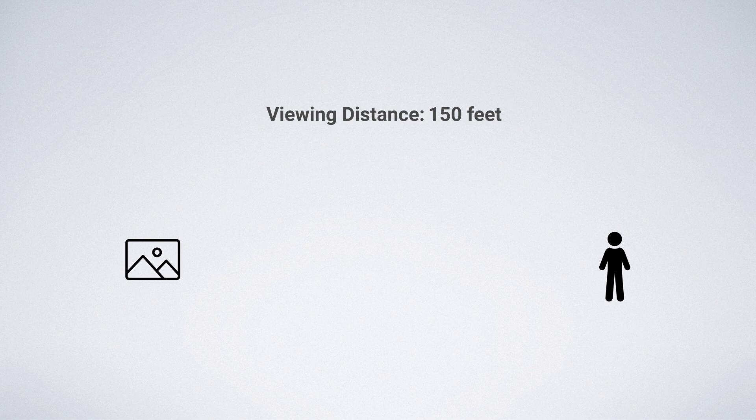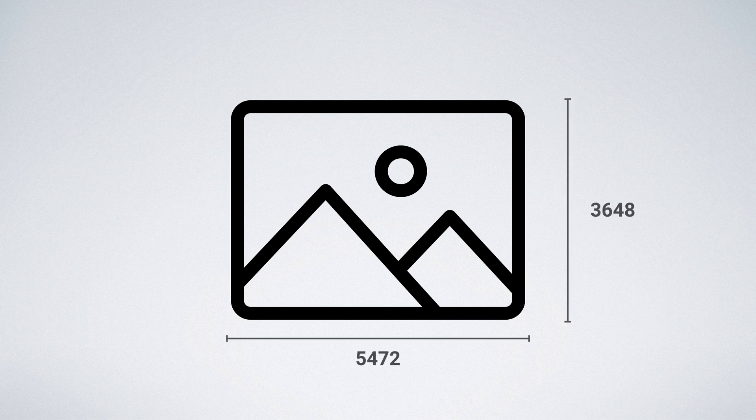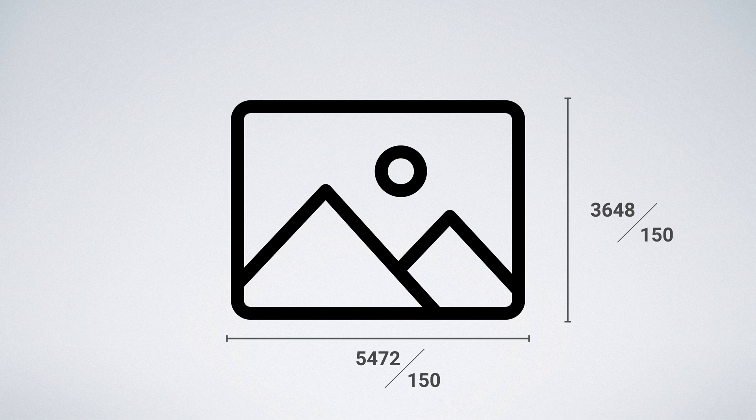To figure out how large you can print your photo, all you're going to do is divide the horizontal and vertical resolution by the number of pixels per inch you want in your final print. We recommend a PPI of 150 or higher for prints that will be viewed within a distance of three feet.